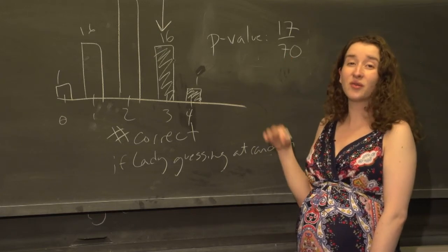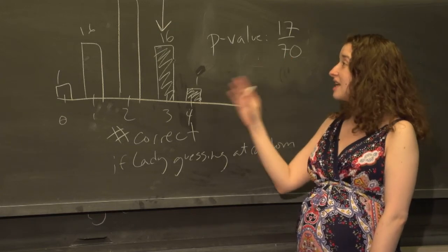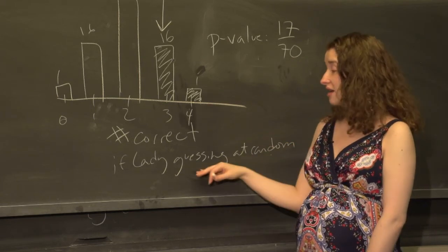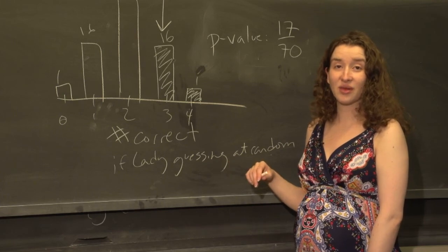Or you could say well you know if we did this 70 times we'd see data like this 17 out of 70 times. That's a lot. I don't think that is evidence against this assumption that the lady is guessing at random.